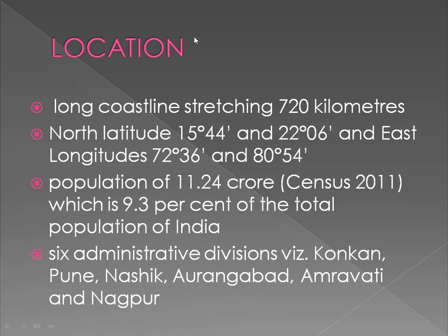The geographical location of Maharashtra is very important. It is located on the western side of India, with a long coastline of 720 km. Its north latitude ranges from 15 degrees 44 minutes to 22 degrees 56 minutes, and its east longitude ranges from 72 degrees 36 minutes to 80 degrees 54 minutes. As per Census 2011, it has a total population of 11.24 crore, which is about 9.3% of the total population of India.